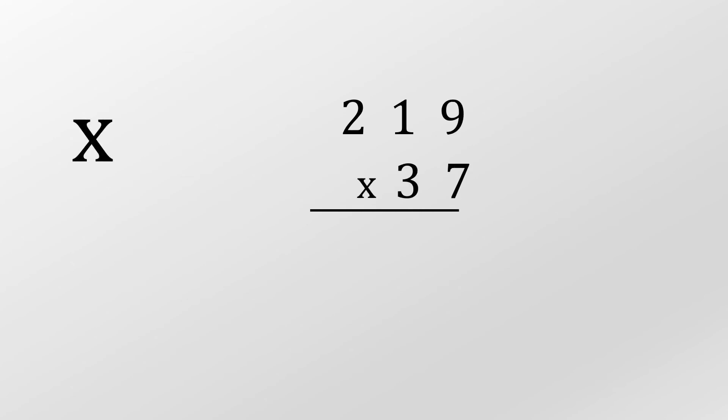Okay, let's do another one. So seven times nine, well that's sixty-three. Three goes down, carry the six. Seven times one, well that's seven. Add to the six gives us thirteen. Three down, carry the one. Seven times two, well that's fourteen. Add the one gives us fifteen.